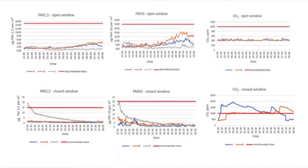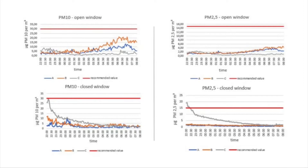The charts outline PM2.5, PM10, and CO2 levels throughout the night. The x-axis shows time, and the y-axis shows micrograms of PM2.5 and PM10 per cubic meter, and parts per million of CO2. The open window measurements show that both PM10 and PM2.5 values rose during the night. Values at locations A and B were higher than at location C, probably due to proximity to a busy road. CO2 measurements with the open window remained evenly low throughout the night due to regular supply of fresh air from outside.